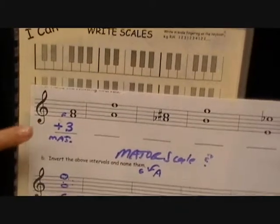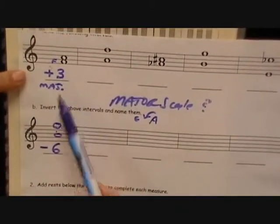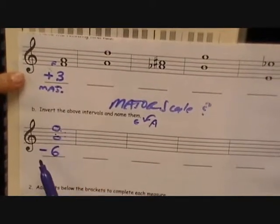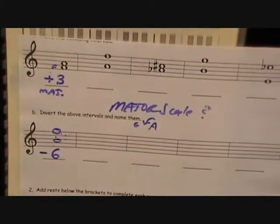And the other thing is, from the actual interval itself to the inverted one, it has to equal nine. So let's just see how this math works. So you see here the question we just did? A major third and a sixth. So what is six and three? Nine. Major became minor.